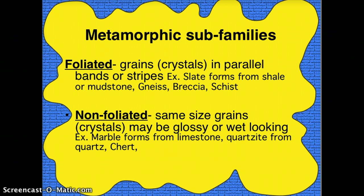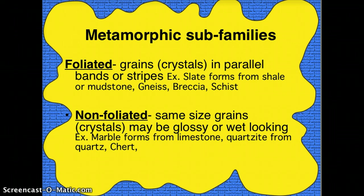There are two groups of metamorphic rocks. One is foliated, where the crystals or grains end up looking fairly parallel or in parallel bands or stripes. Then there's non-foliated — these are tricky. The grain sizes seem to be similar in size, and the crystals may look wet or glossy, like wet salt or sugar. These form as the crystals are starting to re-melt, cook, smush, and break up and change.